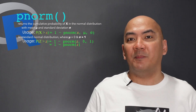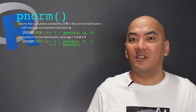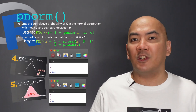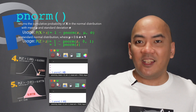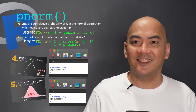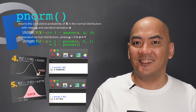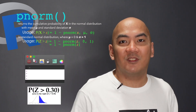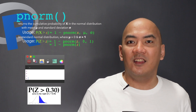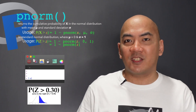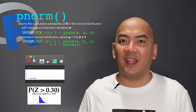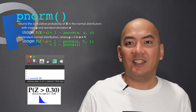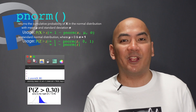If you're asked to find the probability that the standard random variable Z is greater than a specific value, find first the cumulative probability of that value and then subtract it from 1. So if you're asked to find the probability that Z is greater than 0.30, just type 1 - pnorm(0.30) and press Enter.